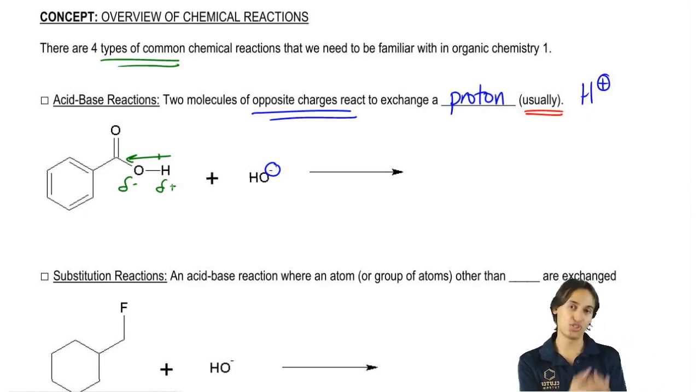That just has to do with the partial charges that we assign. Imagine that the O is like the sumo wrestler pulling on that rope and pulling all the electrons towards itself and the H is like the puny guy that can't even keep up.